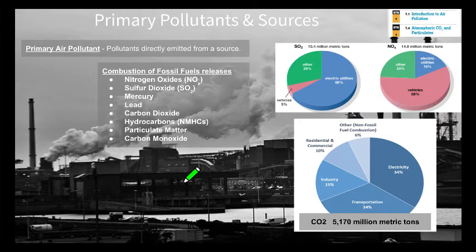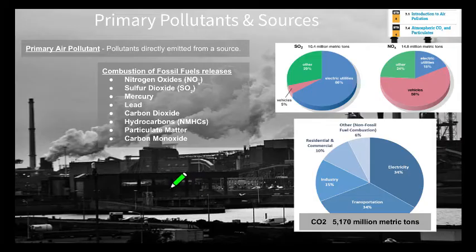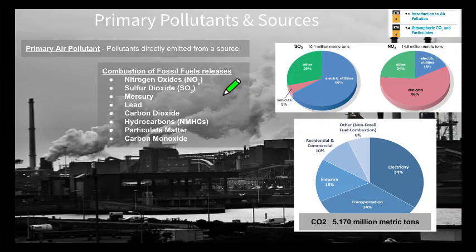Combustion of fossil fuels does a lot of things besides releasing primary air pollutants. These primary air pollutants also react with each other, heat, and sunlight to form secondary air pollutants. They also create other problems like acid rain, in addition to their contribution towards a warming climate. So there are many reasons we need to reduce these air pollutants, but first we need to understand exactly what their sources are.